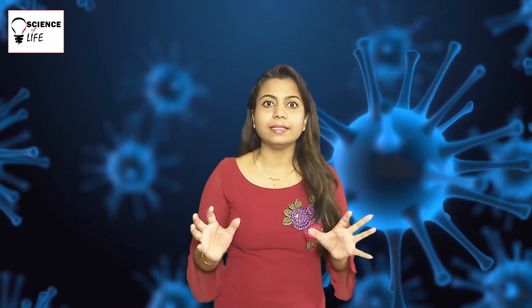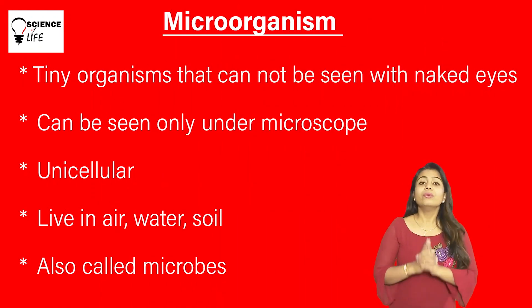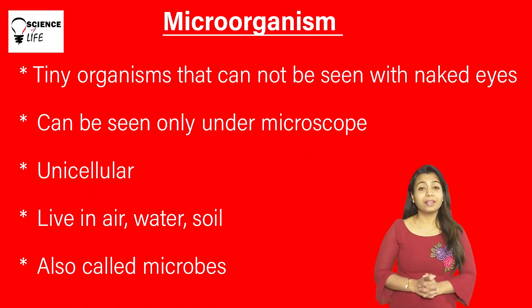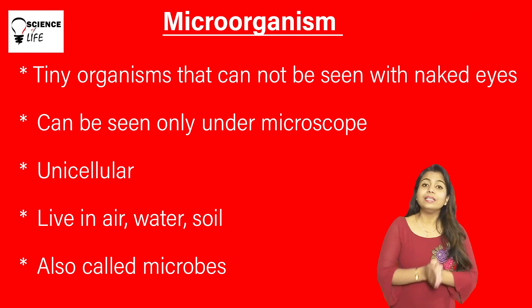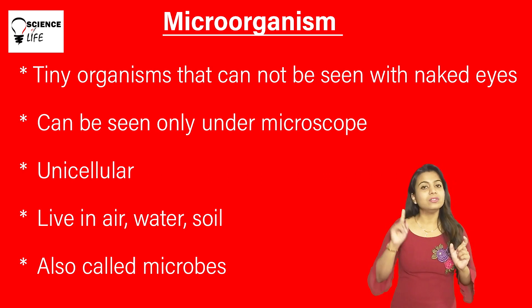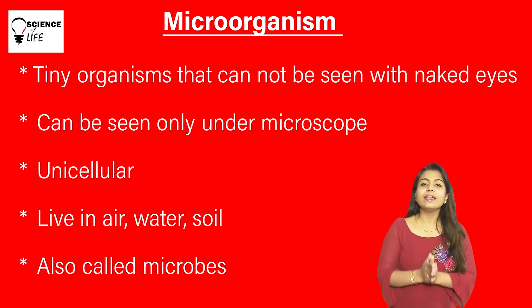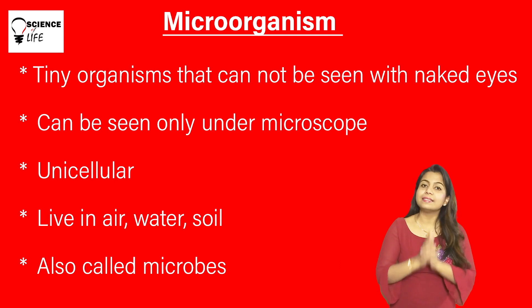Micro-organisms: 'micro' means very small and tiny, and 'organisms' means all living ones. These are so very small that we cannot see them through our naked eyes. We can see them only under a microscope — without a microscope we cannot see micro-organisms. And mostly, micro-organisms are unicellular — 'uni' means one and 'cellular' means cell — so they mostly have only one cell in their bodies.